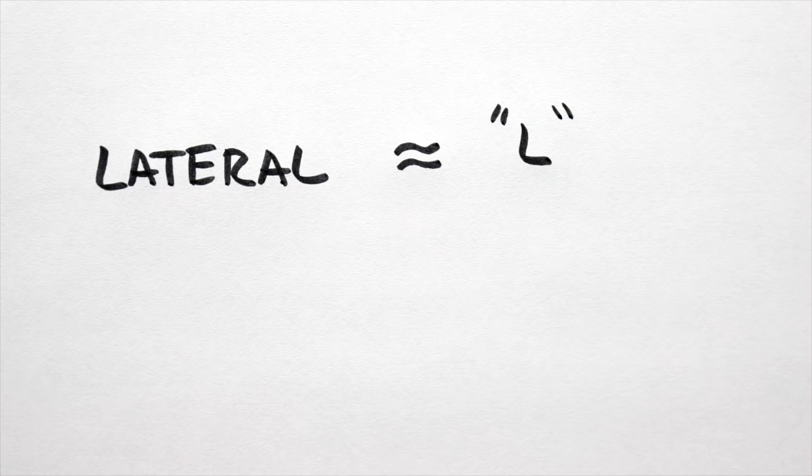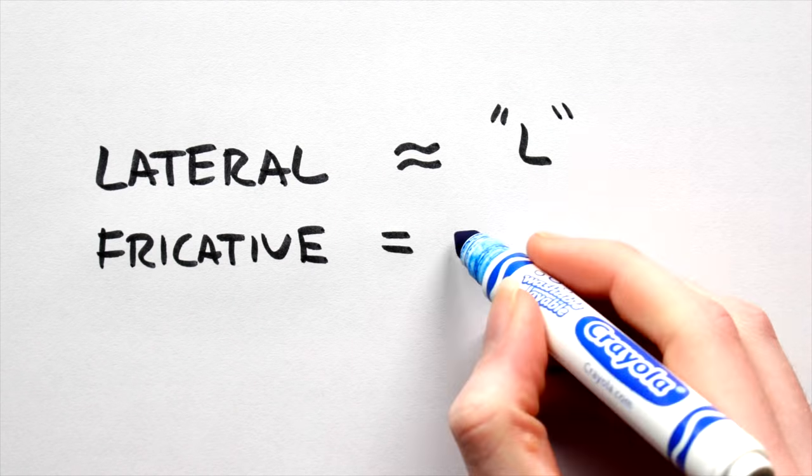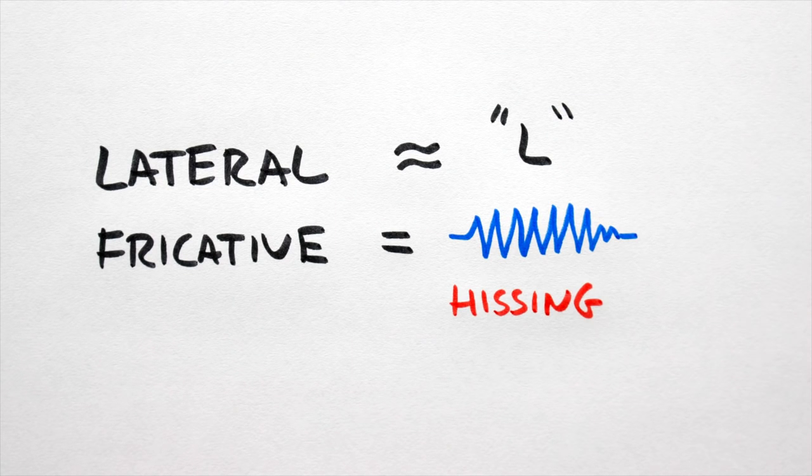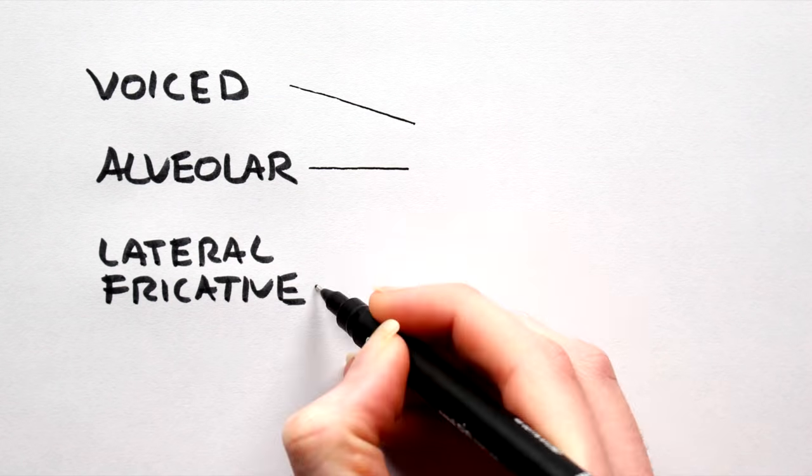Lateral means it's an L-type sound, and fricative means that the airflow should be turbulent, producing a distinctive hissing sound. Mix up all the ingredients, and it'll sound something like this.